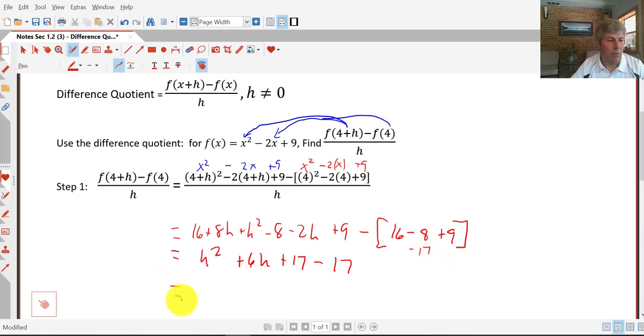So that equals h. Cancel those out. We factor out the h out of h squared and 6h, so we get h times h plus 6 all over h.